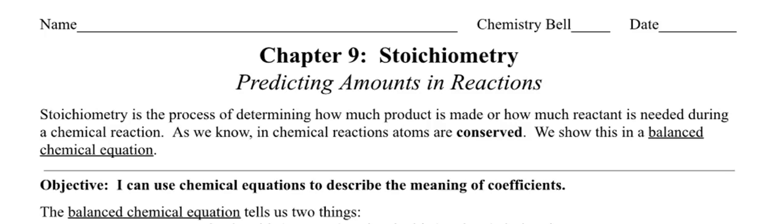It's predicting amounts in reactions. Amounts of what? How much product or how much reactant. So let's see what it officially says here. Stoichiometry is the process of determining how much product is made or how much reactant is needed during a chemical reaction. Don't you think this is really important? If you think about it, yes.